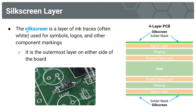That last layer of importance is the silkscreen. This is the layer where we apply ink traces — which are often white — used for symbols, logos, and other component markings, which you can see here: symbol markings for this diode, for these capacitor components, for this component here. It's the outermost layer on either side of the board. The silkscreen layer has been applied on top of the green solder mask, which has been applied on top of the outermost copper layer used for signal traces.